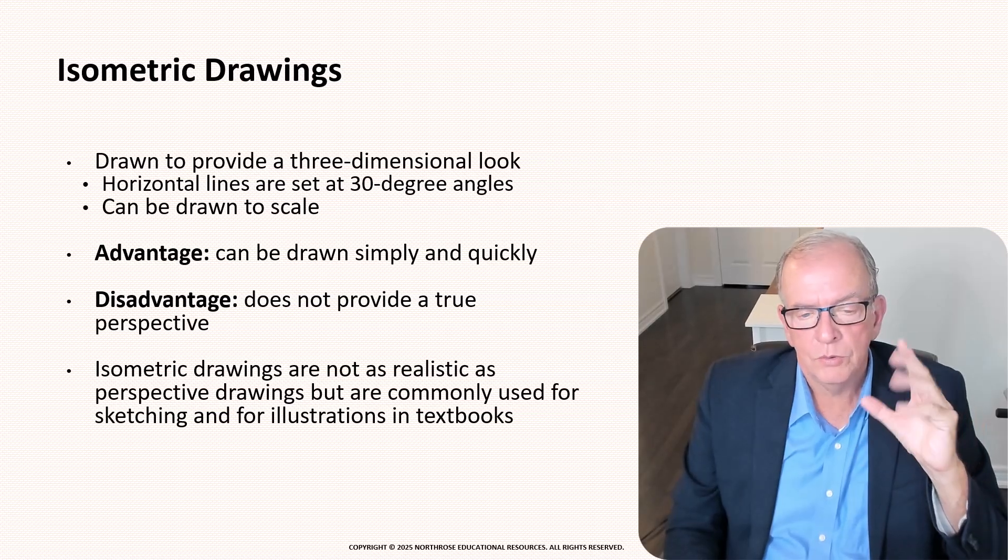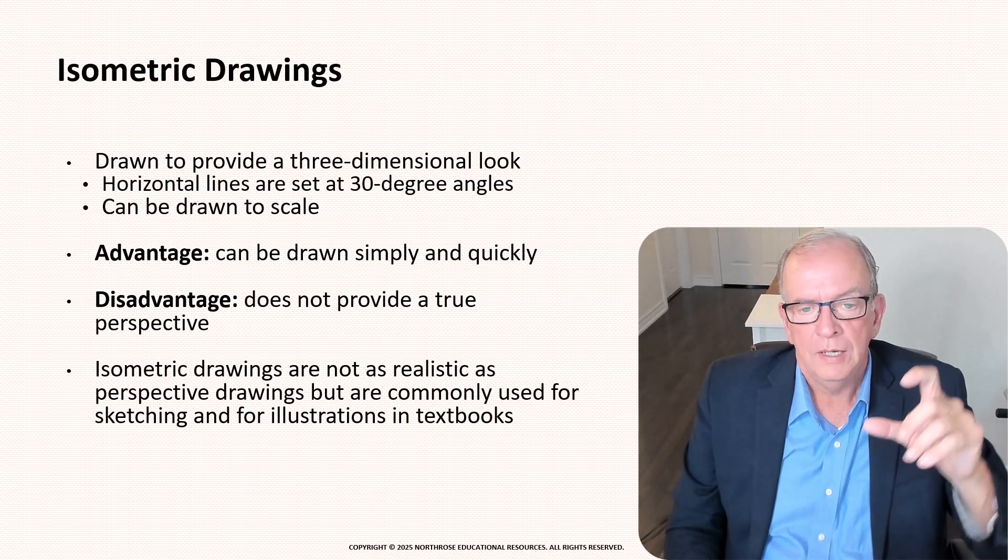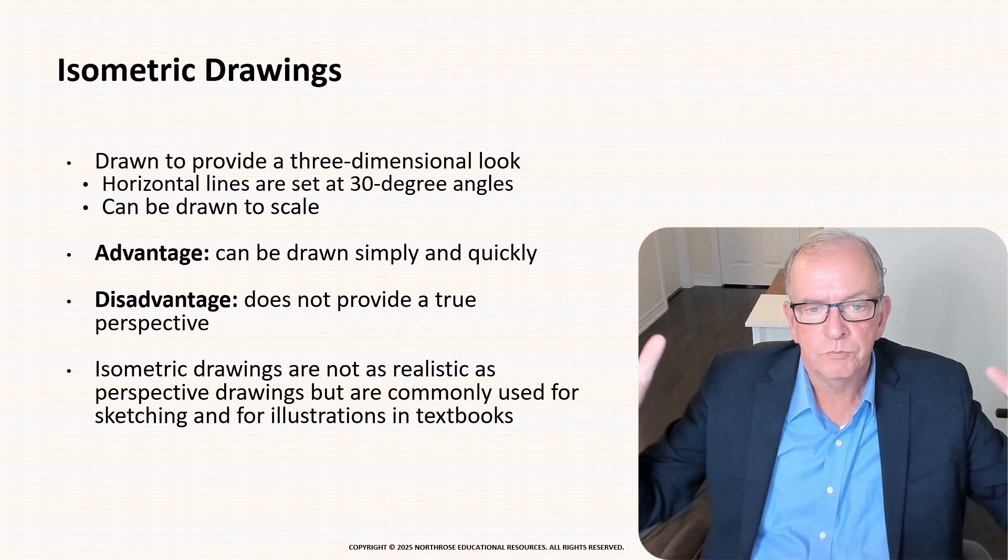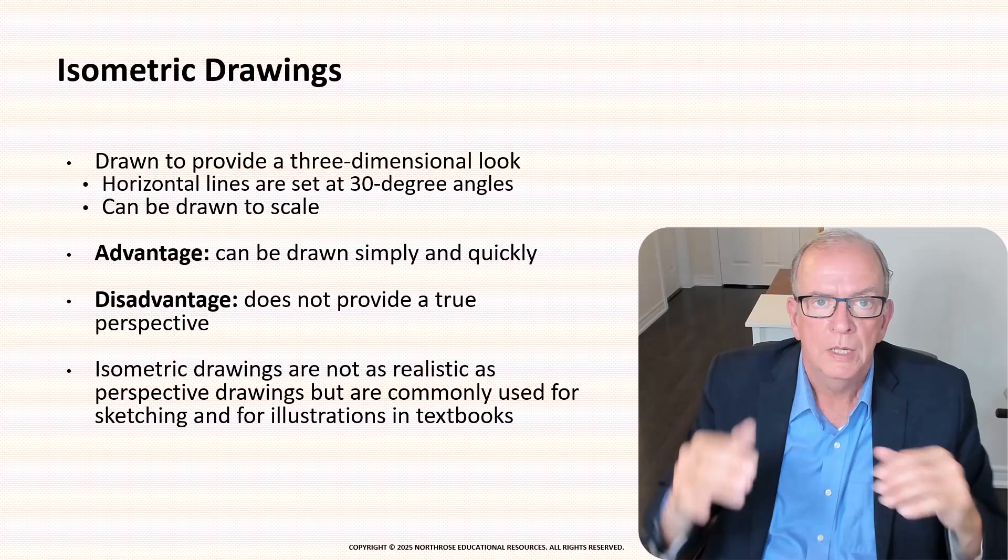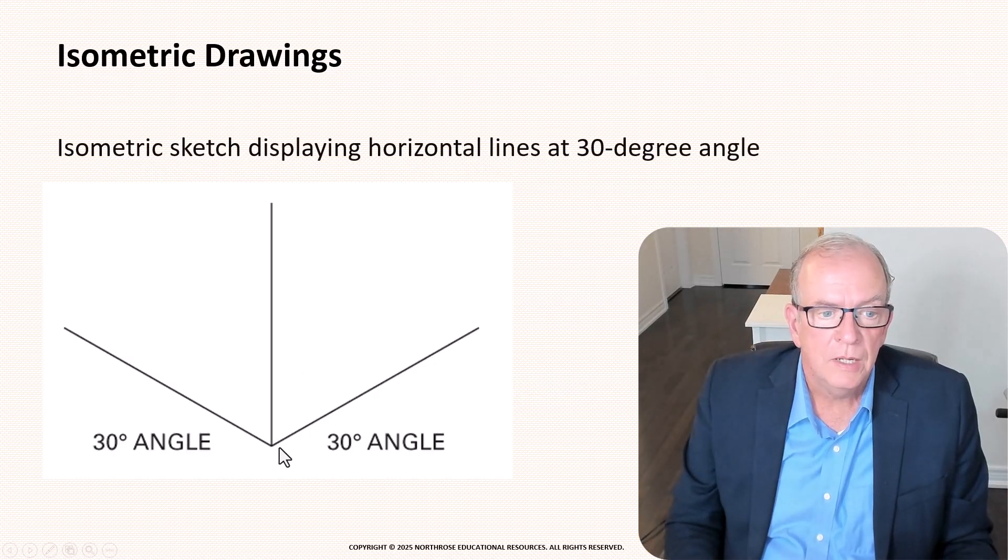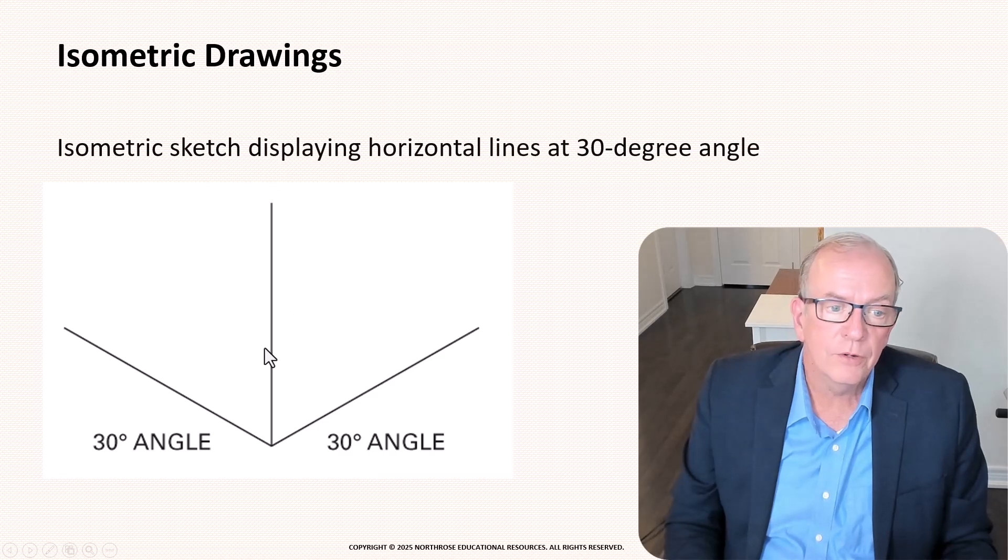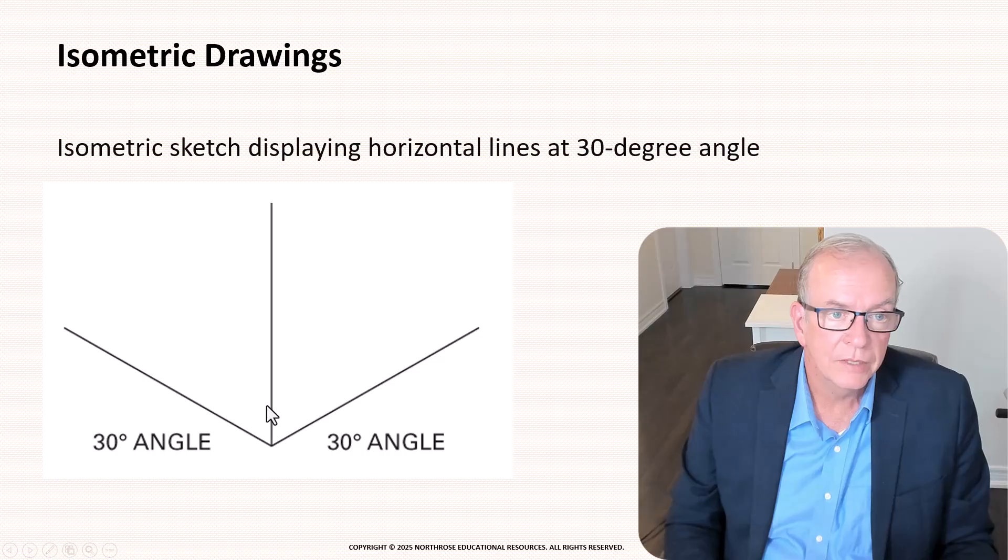So we'll talk about scaling in another video because I get into that but basically it's just proportionally reduced so that it looks like what it is that you're seeing. With isometric drawings they draw horizontal lines out at a 30 degree angle and vertical lines are drawn vertical and so that's kind of the crux of it to give you an isometric view.